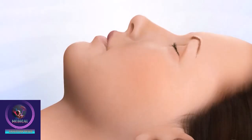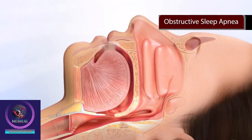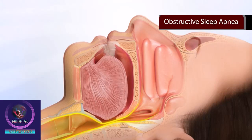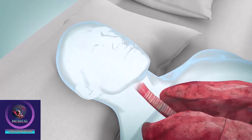The most common type of sleep apnea is called obstructive sleep apnea and occurs when the muscles and soft tissue in the back of the throat relax during sleep. This causes a narrowing or obstruction of the airway, during which breathing momentarily stops. It can also occur if you have bone deformities or larger than normal tissues in your nose, mouth, or throat.